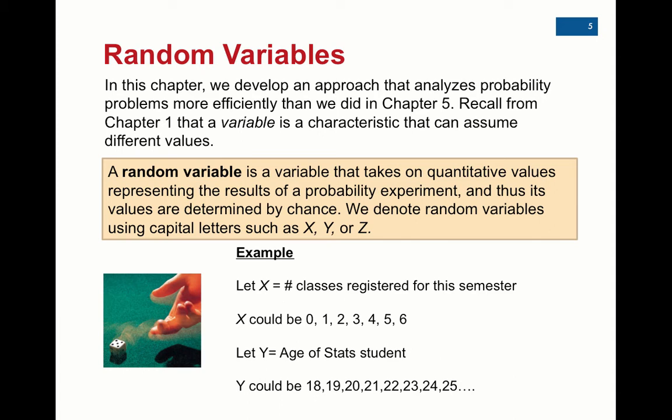Let's say the experiment is I want to go out and get information on the number of classes that students are registered for this semester. So I let X be the random variable, the number of classes registered for this semester. And I go out and I start collecting information on the number of classes each student is registered for. So therefore, it's a random variable. Each selection or each time I collect data, I don't know exactly what the number of classes any individual student has.